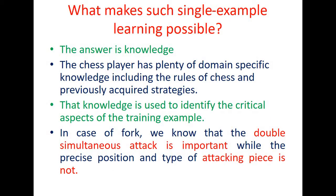What makes such single-example learning possible? The answer is knowledge. The chess player has plenty of domain-specific knowledge, including the rules of chess and previously acquired strategies. That knowledge is used to identify the critical aspects of the training example. In the case of fork, we know that the double simultaneous attack is important, while the precise position and type of attacking piece is not.